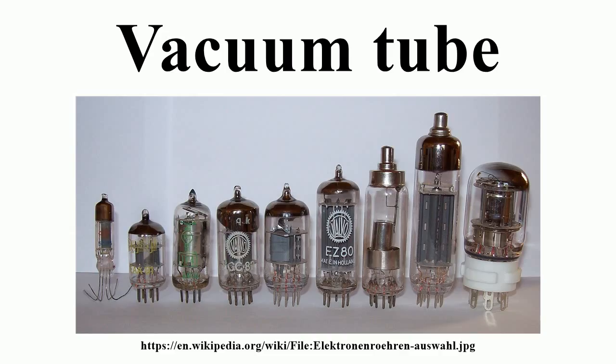In the 1940s, the invention of semiconductor devices made it possible to produce solid-state devices, which are smaller, more efficient, more reliable, more durable, and cheaper than tubes. Hence, from the mid-1950s, solid-state devices such as transistors gradually replaced tubes. The cathode-ray tube remained the basis for televisions and video monitors until superseded in the 21st century. However, there are still a few applications for which tubes are preferred to semiconductors, for example the magnetron used in microwave ovens and certain high-frequency amplifiers.